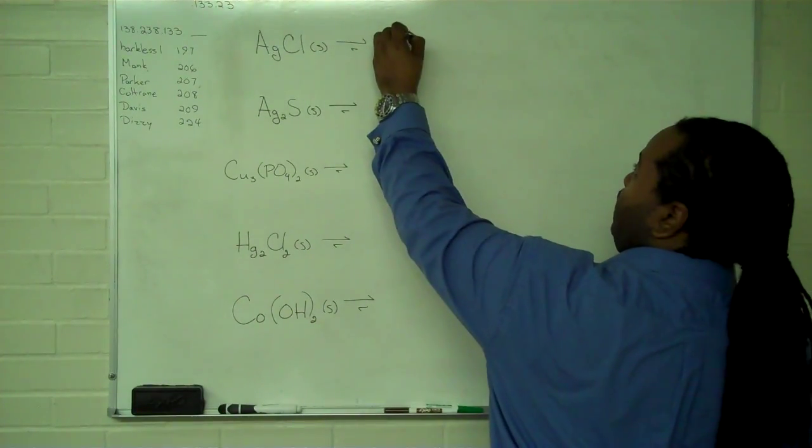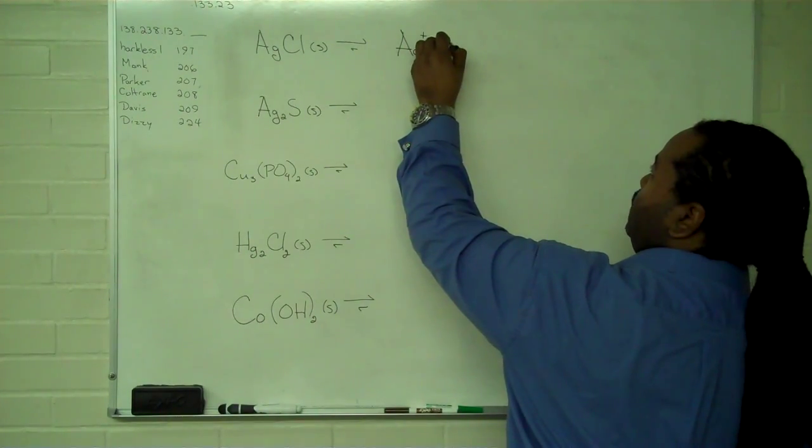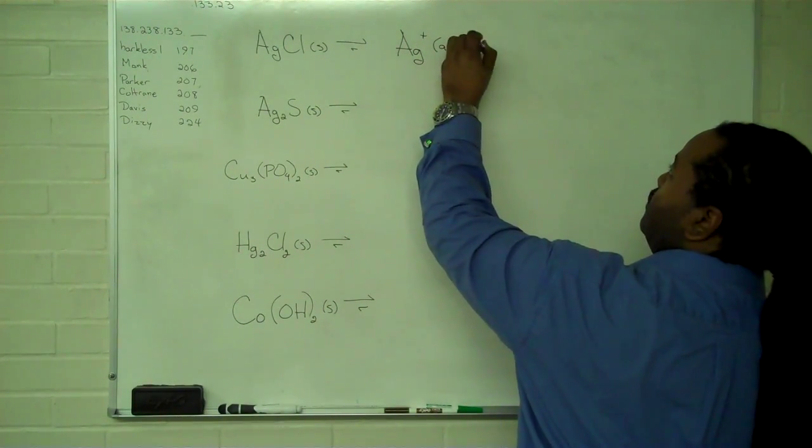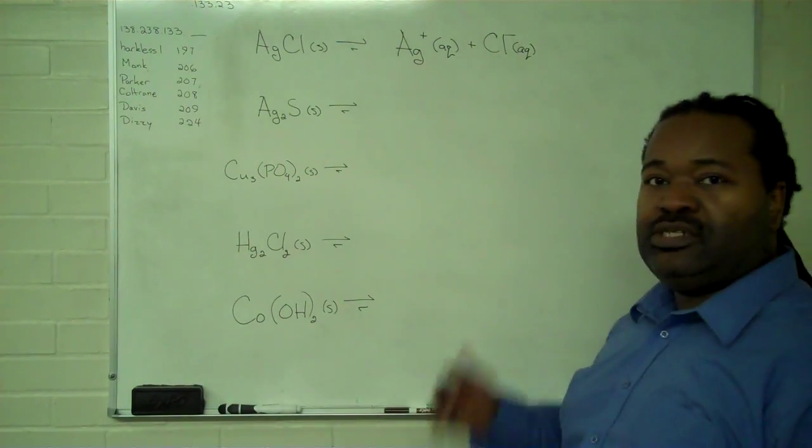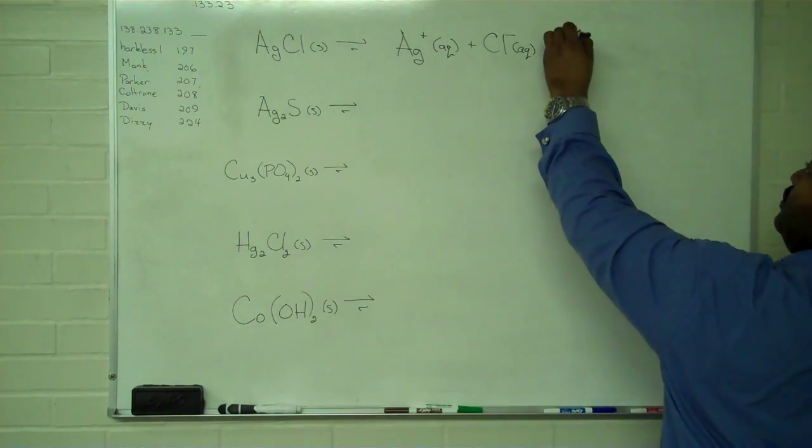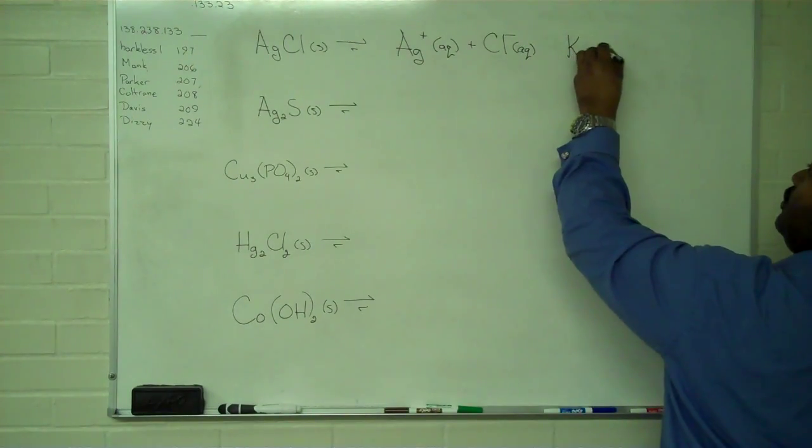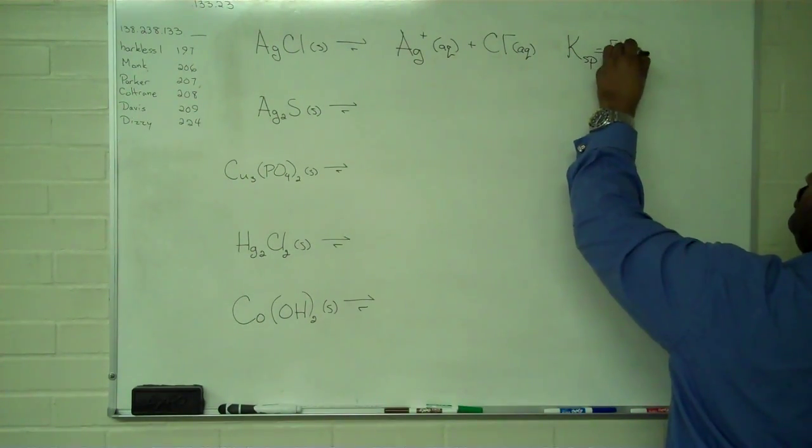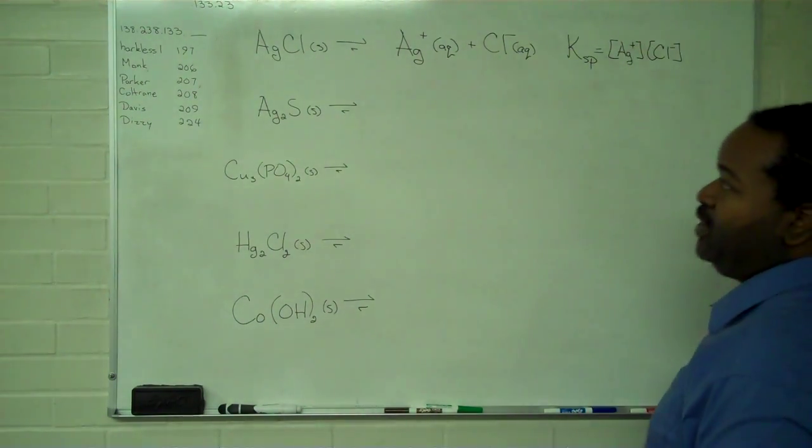So for our silver one chloride, we have silver plus in solution and chloride ion in solution. And so the solubility product constant is just a special case of an equilibrium constant. In this case, the solid will not participate. So I will have concentration of silver times concentration of chloride.